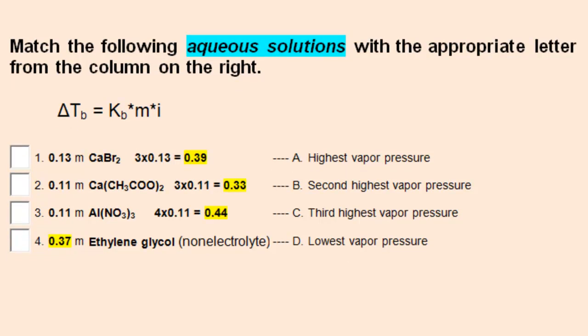We have the identical compounds and molality, so M times i is identical to the previous problem. The difference here is vapor pressure.